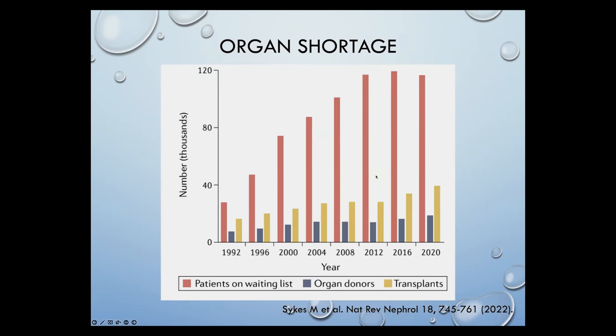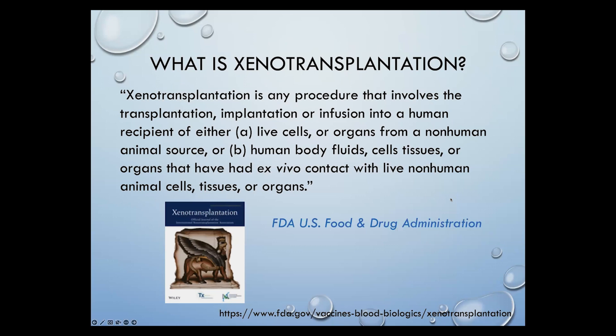Despite close to 40,000 patients receiving organ transplants per year and about 23,000 patients getting kidney transplants per year, there is unfortunately a significant difference between the actual supply and demand of organs. There hasn't really been much improvement in the number of deceased donor organs available each year. Because of scarcity, and a vast majority of dialysis patients not qualifying for kidney transplant, improving kidney transplantation has always been a major goal.